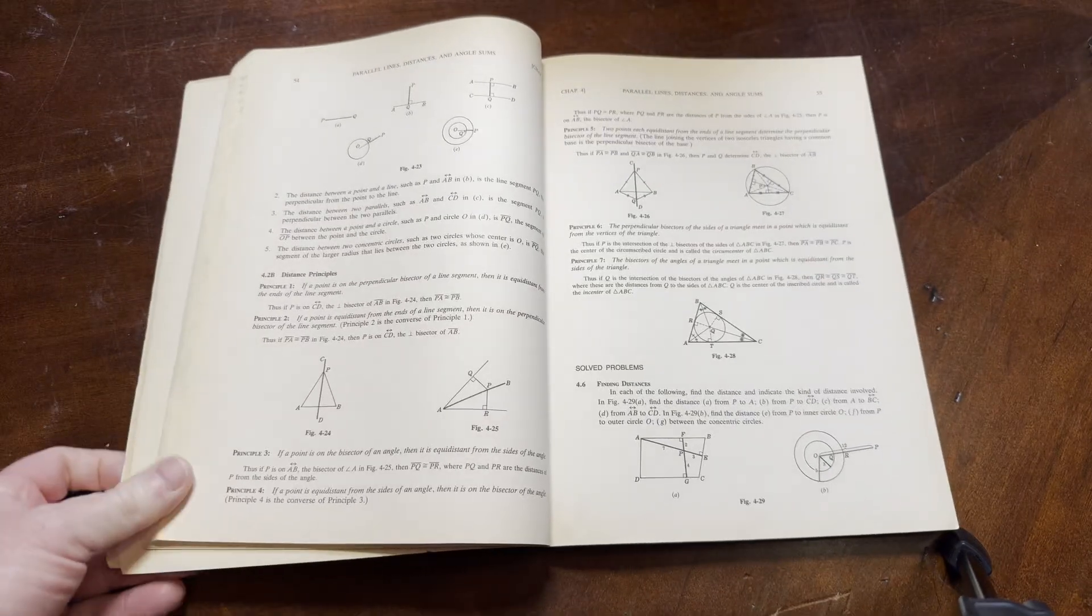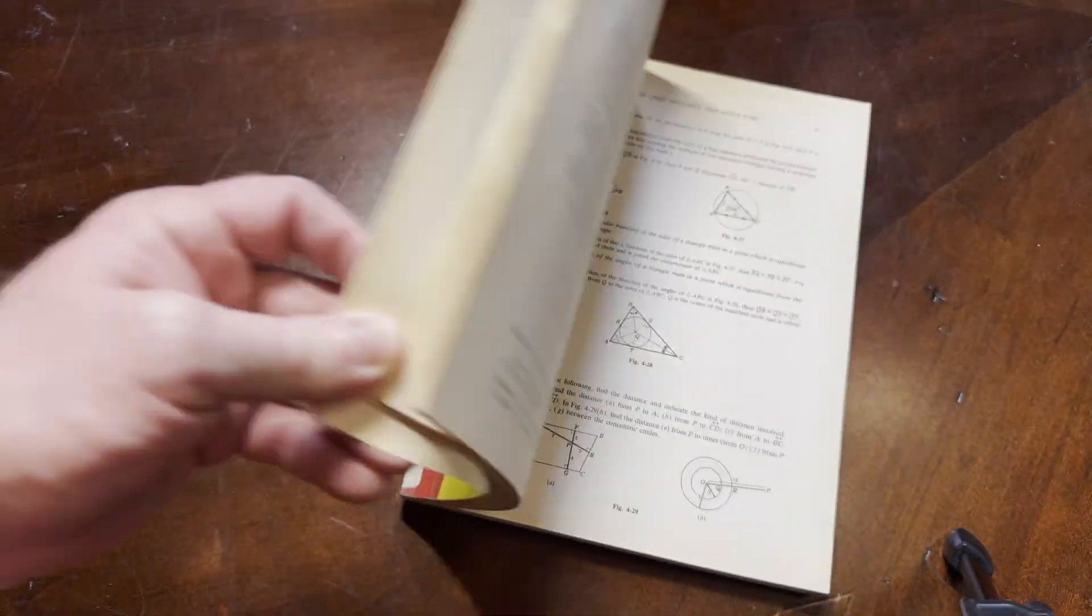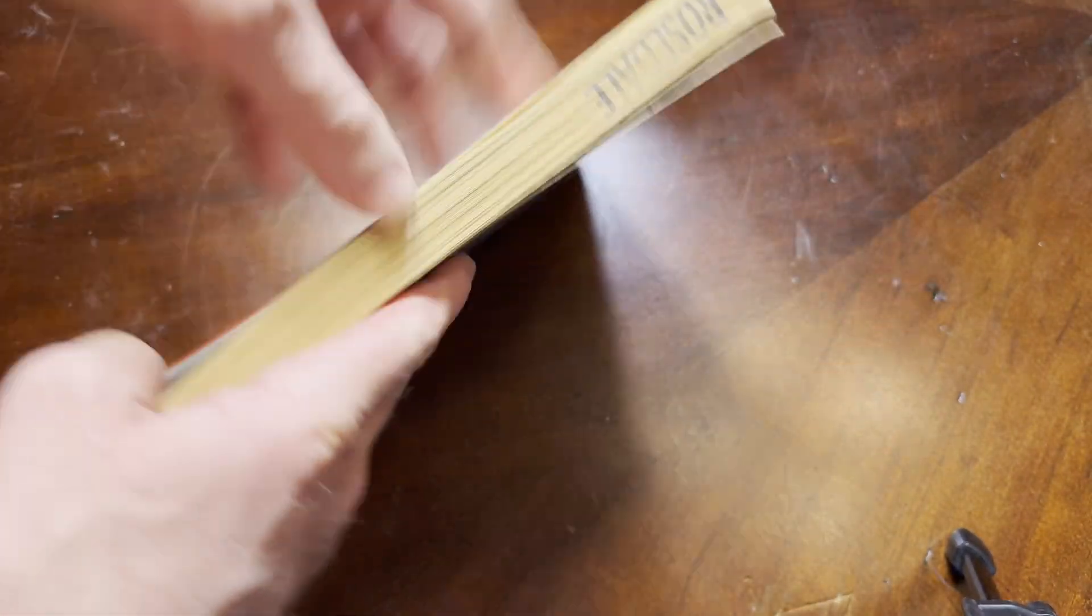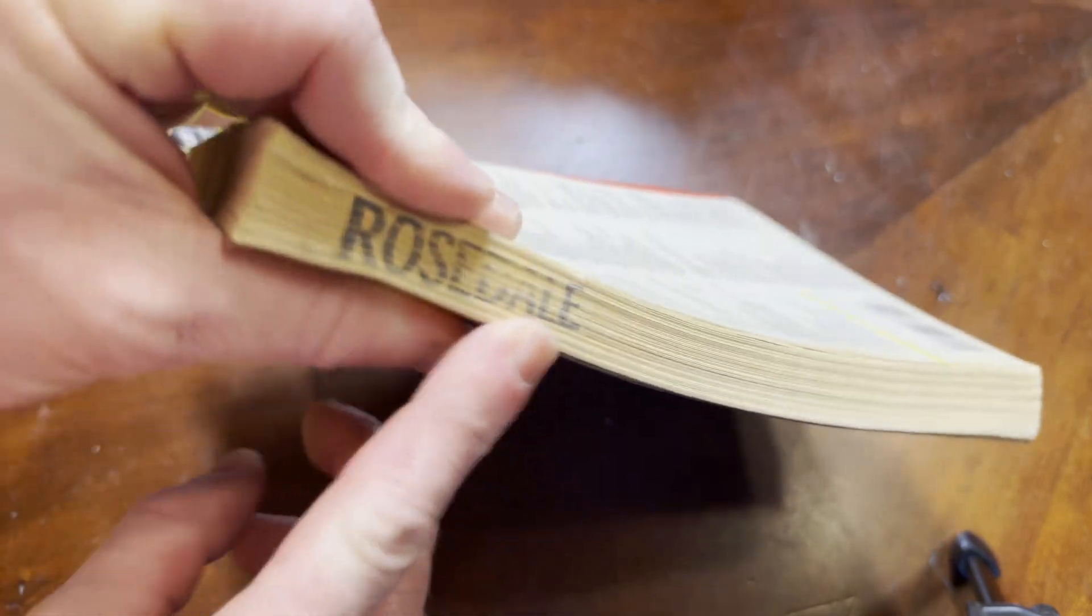I just got to give it a whiff here. Oh, it smells amazing. So I think this is worth having. I think it's worth having all the Schaum's. This one in particular is kind of nice because it's like an older edition. This one also has like a weird plastic on the cover. And then here it says Rosedale. I guess that was the library? Let's just check.